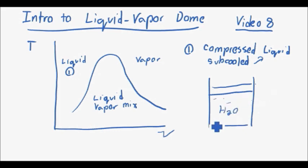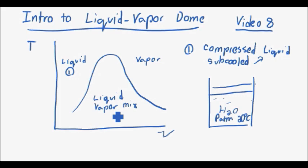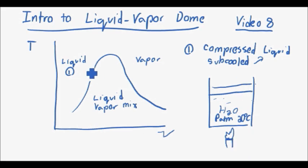The container is at atmospheric pressure and 20 degrees Celsius. From common knowledge, if you're at 20°C at atmospheric pressure — just water in a container — it's going to stay as water. You're nowhere close to starting to evaporate; you have to add heat to your system to get to the liquid-vapor dome.